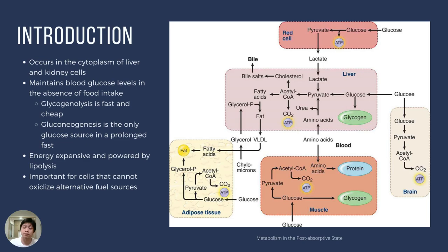Another organ highly dependent on glucose is the brain. It is estimated that the brain utilizes up to 100 grams of glucose per day. Since we don't eat all the time, it is the brain that actually consumes a lot of glucose in the interdigestive phase between meals. Because the brain is essential, the body must maintain glucose at appropriate levels.